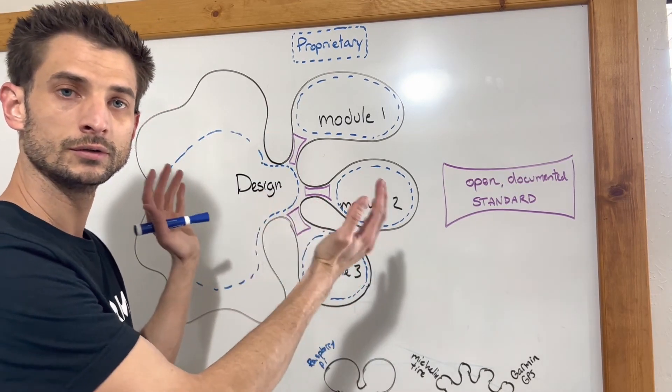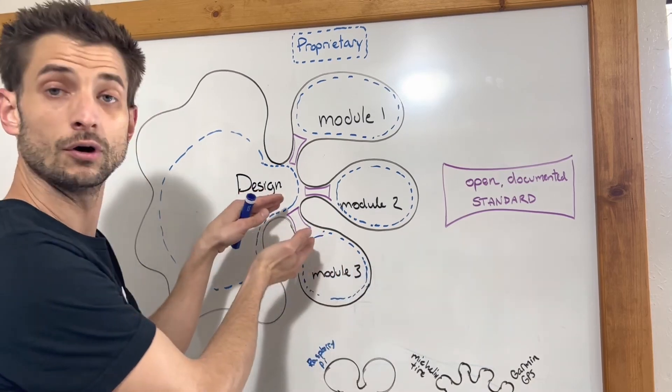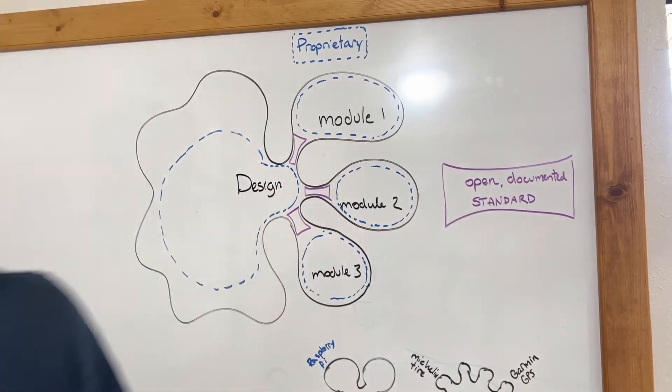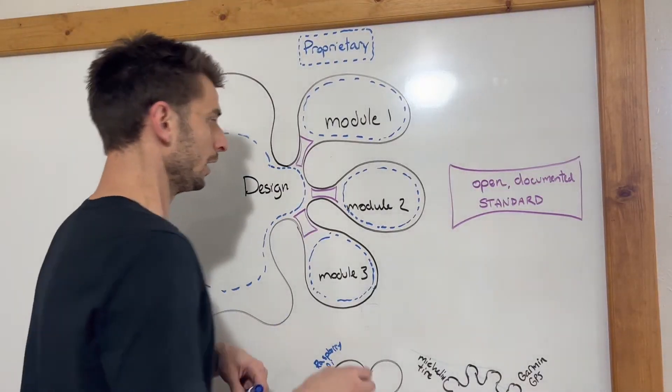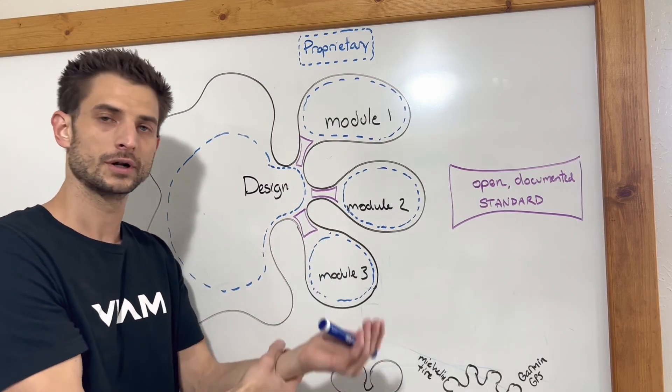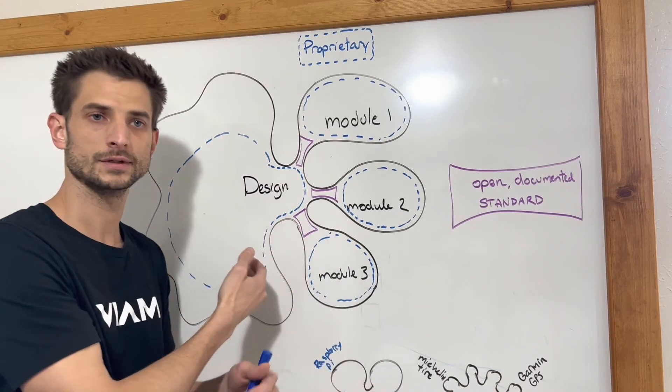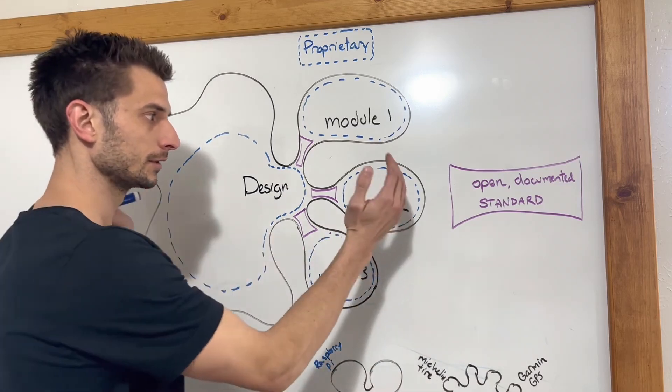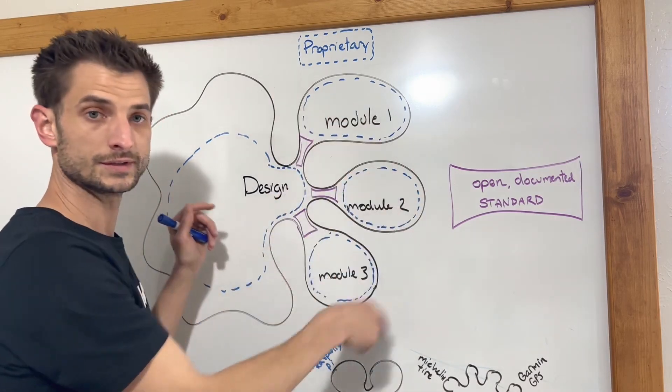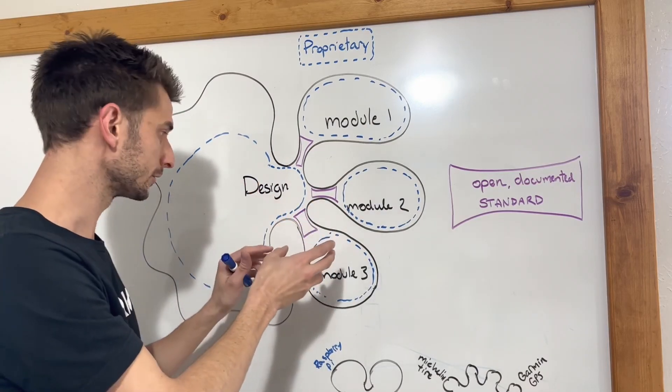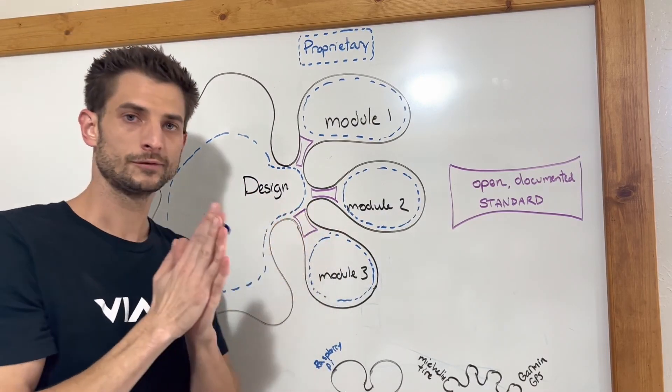When you put together all the design elements collectively, you have an outcome, a product offering. In our case, it could be safe, reliable transportation. So the Toyota Camry is everything inside the black lines, including IP from multiple manufacturers.